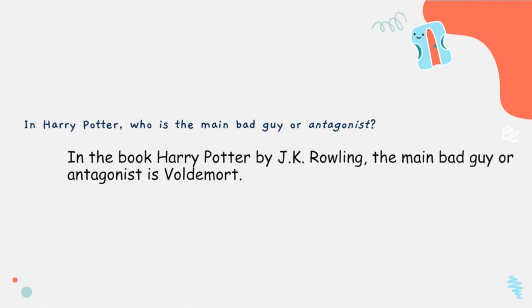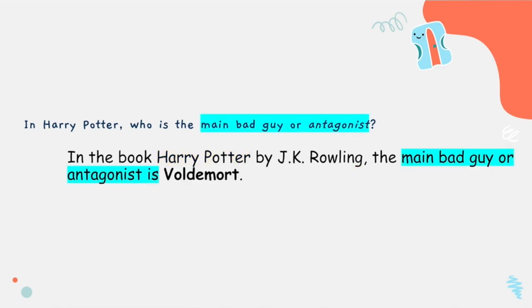It reads: in the book Harry Potter by JK Rowling, the main bad guy or antagonist is Voldemort. Looking more closely at this point, we can see that the point does mention the text title and the author. It also uses the key words from the question — 'the main bad guy or antagonist' — and it goes on to answer the question, letting us know that the answer is Voldemort.